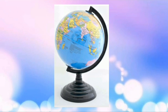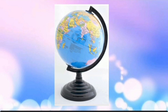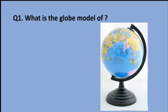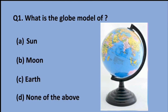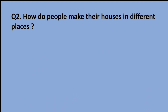First of all, see this picture and tell me what it is. Yes, you found it right — it is a globe! Our first question is: what is the globe a model of? Sun, Moon, Earth, or none of the above? The right answer is Earth. We all know that the globe is the model of Earth.